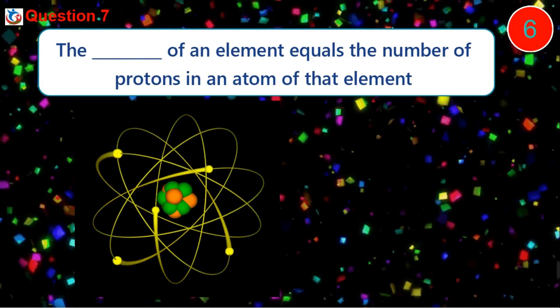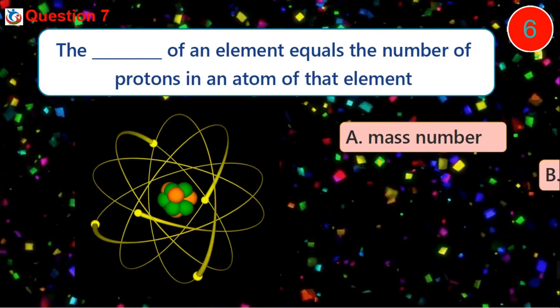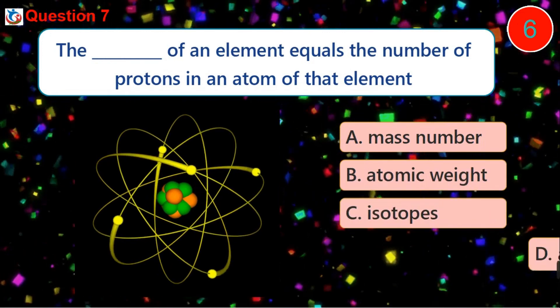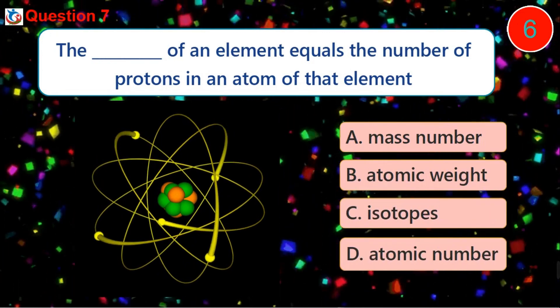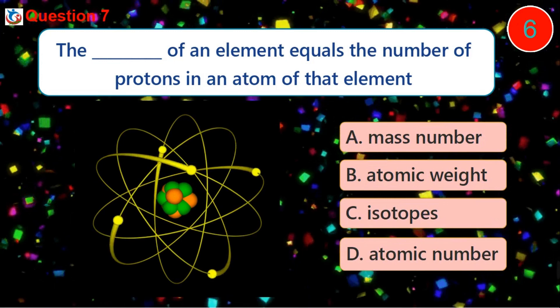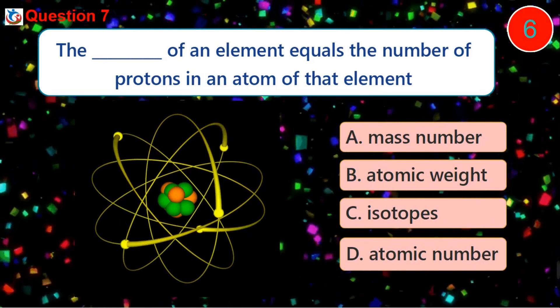Question 7. The dash of an element equals the number of protons in an atom of that element. A. Mass number B. Atomic weight C. Isotopes D. Atomic number.